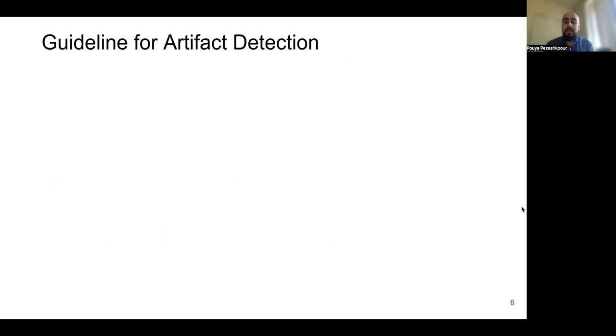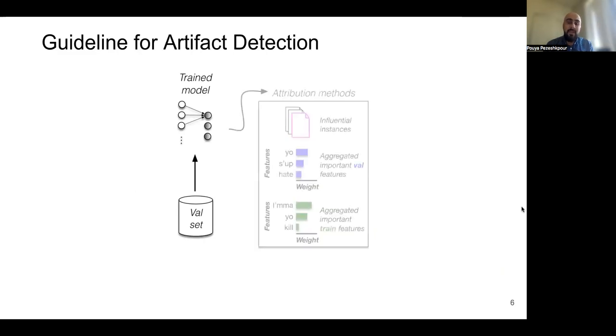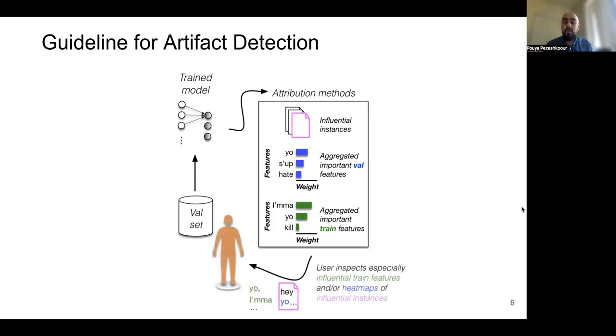Now that we have different attribution method available for us, we provide our guideline for artifact detection. We start from a specific validation set, and upon getting model prediction for instances in this set, we explain this prediction using different attribution method. Then, aggregating this explanation based on frequency, we provide the result to a user and detect or discover artifacts.